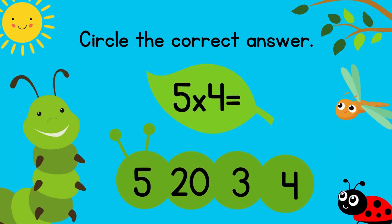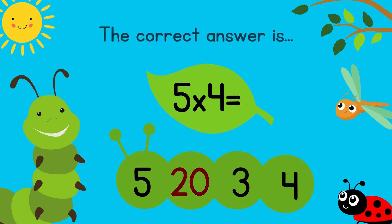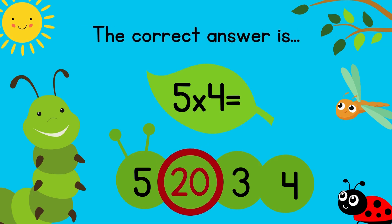Circle the correct answer. 5 times 4 equals? The correct answer is 20. Excellent!